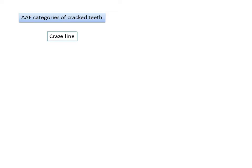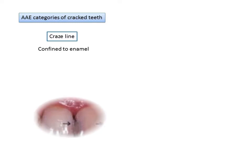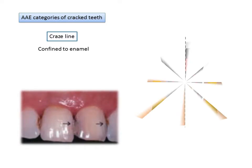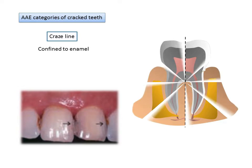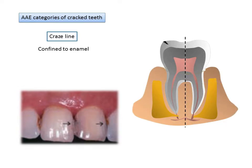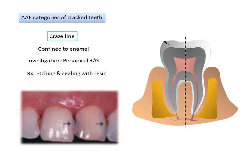According to the American Association of Endodontists (AAE), cracked teeth are divided into five categories. The first is craze lines, which are confined to the enamel — fine lines that may or may not be visible on a periapical radiograph. If discolored following constant staining, they may need to be etched and sealed with composite resin for aesthetic purposes.